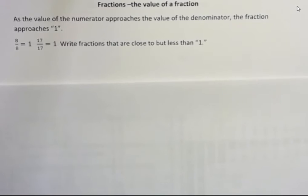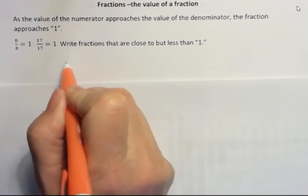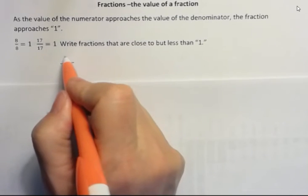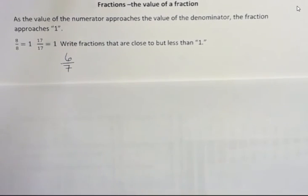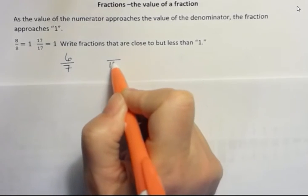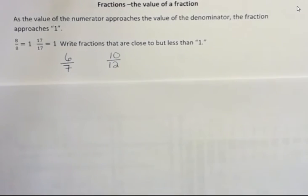Well, I'm going to write a few, and if I want to say something like 7, the closest I can get to 1 without actually getting there using whole numbers is 6. So 6 sevenths is pretty close to 1. If I had something like 12 and I wrote 10, is that pretty close to 1? It's pretty close, right? Because I could go up to 11. It's not the closest, but they are pretty close to 1.